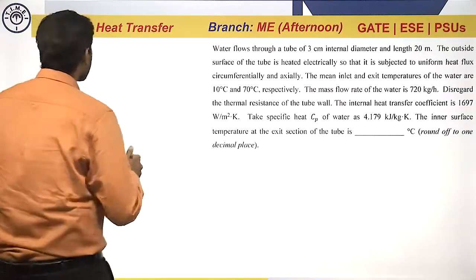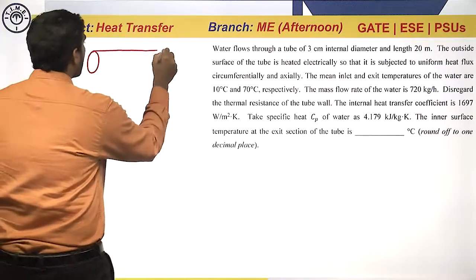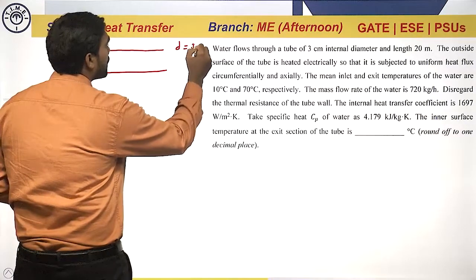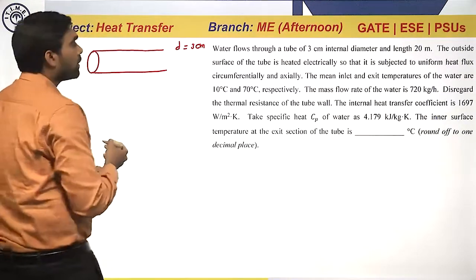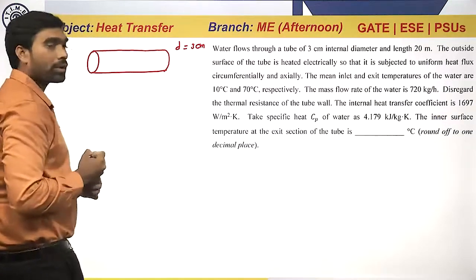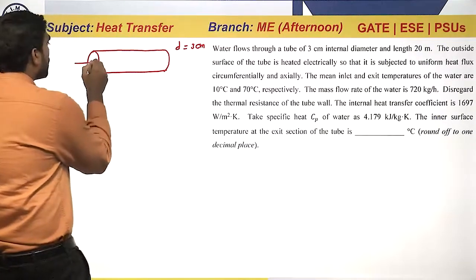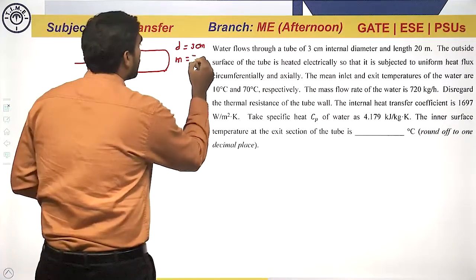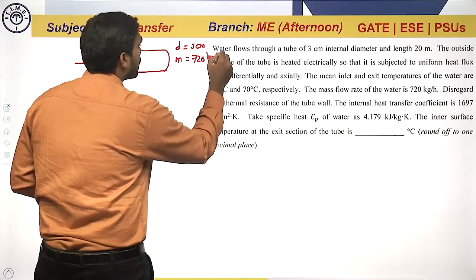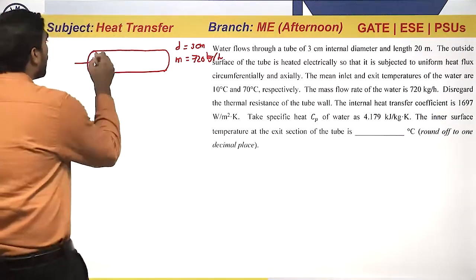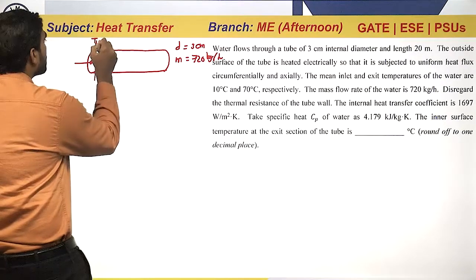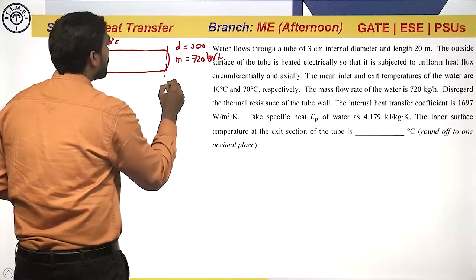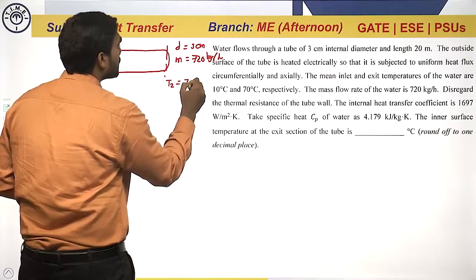Given: pipe internal diameter d is 3 centimeter. Mass flow rate of water m is 720 kg per hour. The water inlet temperature is 10 degrees Celsius, and the exit temperature T2 is 70 degrees Celsius.